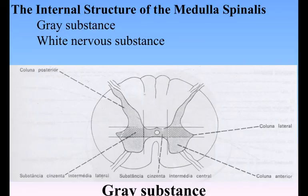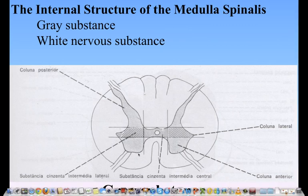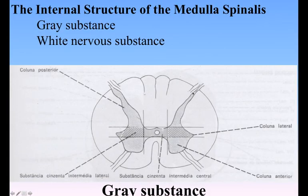The internal structure of the medulla spinalis. On examining a transverse section of the medulla spinalis, it is seen to consist of gray and white nervous substance, the former being enclosed within the latter. The gray substance consists of two symmetrical portions, one in each half of the medulla spinalis, joined across the middle line by a transverse commissure of gray substance, through which runs a minute canal, the central canal, just visible to the naked eye.